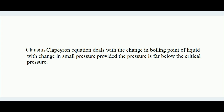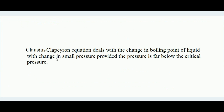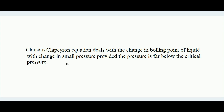The equation applies only when the pressure is far below the critical pressure because beyond critical pressure there is no existence of two distinct phases, and therefore no boiling point exists. This is why the Clausius-Clapeyron equation is applicable only when the pressure applied over the liquid is far below the critical pressure.